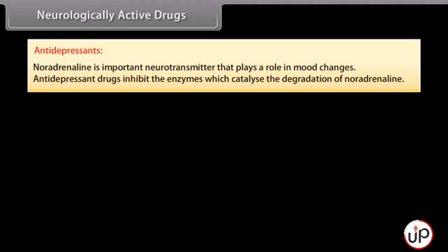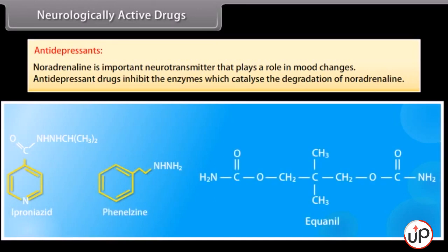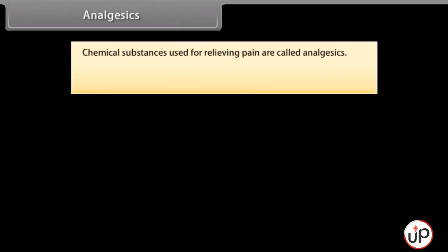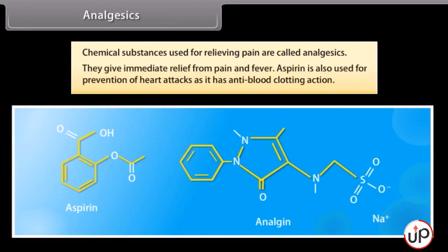Antidepressants: noradrenaline is an important neurotransmitter that plays a role in mood changes. Antidepressant drugs inhibit the enzymes which catalyze the degradation of noradrenaline — for example, iproniazid and phenelzine. Equinol controls depression as well as hypertension. Analgesics: chemical substances used for relieving pain are called analgesics — for example, aspirin and analgen. They give immediate relief from pain and fever. Aspirin is also used for prevention of heart attacks, as it has an anti-blood-clotting action.